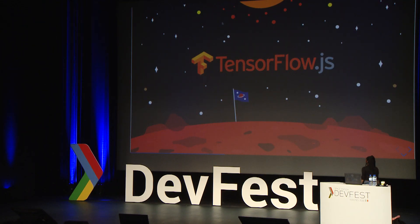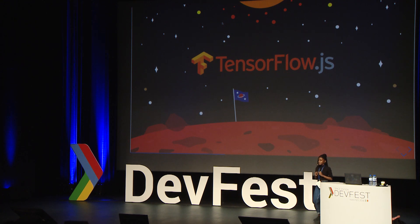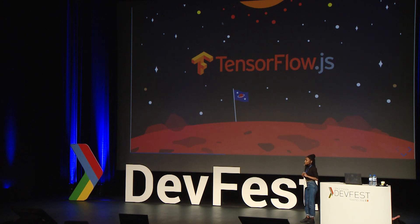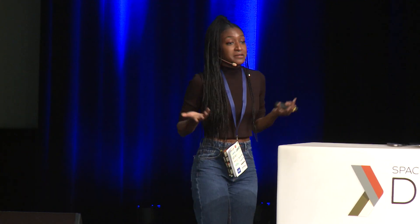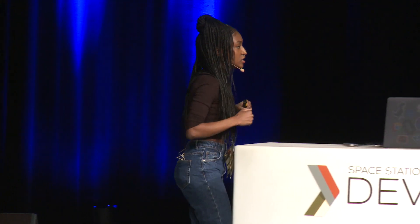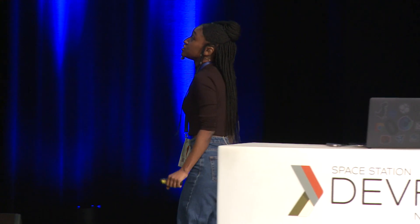All of this leads us to TensorFlow.js. A little bit of context: later in 2017, the Brain team at Google released a library called DeepLearn.js, and this library has since evolved into TensorFlow.js. As you can imagine, TensorFlow.js is a library that allows you to do machine learning with JavaScript.